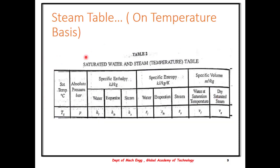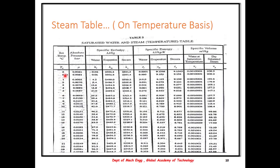On the temperature basis, the table is very similar except the first value is the saturation temperature followed by pressure. The rest of the table and its values are the same. It would look something like this: temperature values, saturation temperature, pressure values, and the enthalpy set, the entropy set, and the specific volume set.